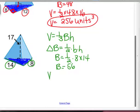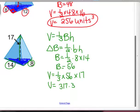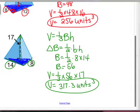So, now I go back to my volume. It's a third times big B, which we just decided was 56, times the height, which is from here up 17. So, a third times 56, times 17, 317.3 units, because there's no other label, to the third power. Had to do a little rounding on that one. I think it was .3 repeating when I did the math.